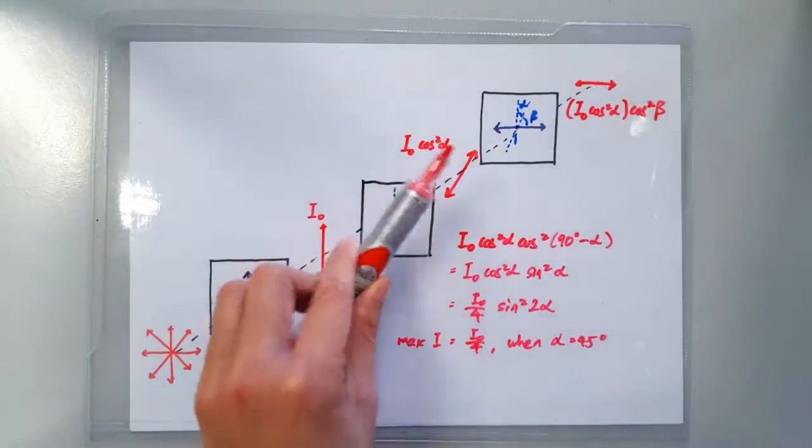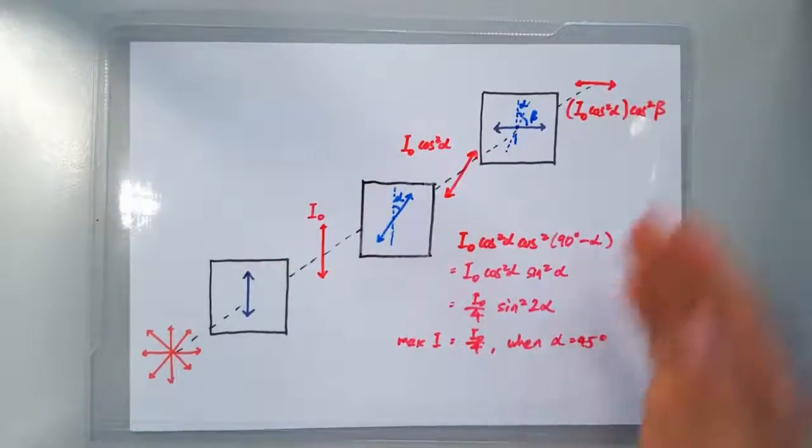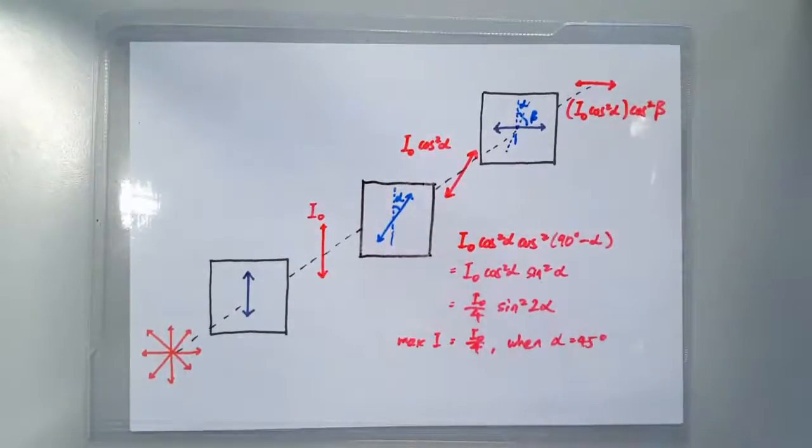So yes, if this polarizer is oriented at 45 degrees, we get the maximum amount of light passing through these three polarizers. Okay, that's all. Ta-ta!